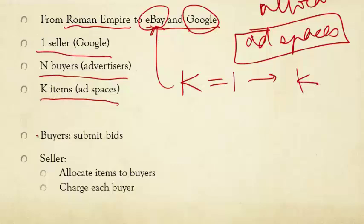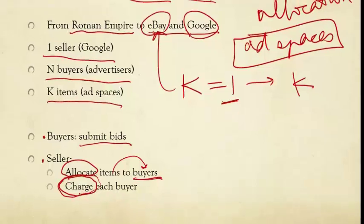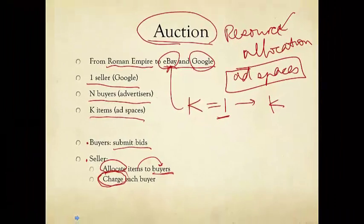So in these kinds of auctions, we have just one seller, say Google, N buyers, advertisers, and K items, say K advertisement spaces. We will first focus on the case of K equals one, which perhaps suits eBay modeling better, before we generalize to any number of items. Now, these buyers, and there are N of them, will submit bids in an auction. And then the seller will make two decisions. The first is the allocation decision. Which item goes to which buyer? And if there's only one item, then which buyer will get it?